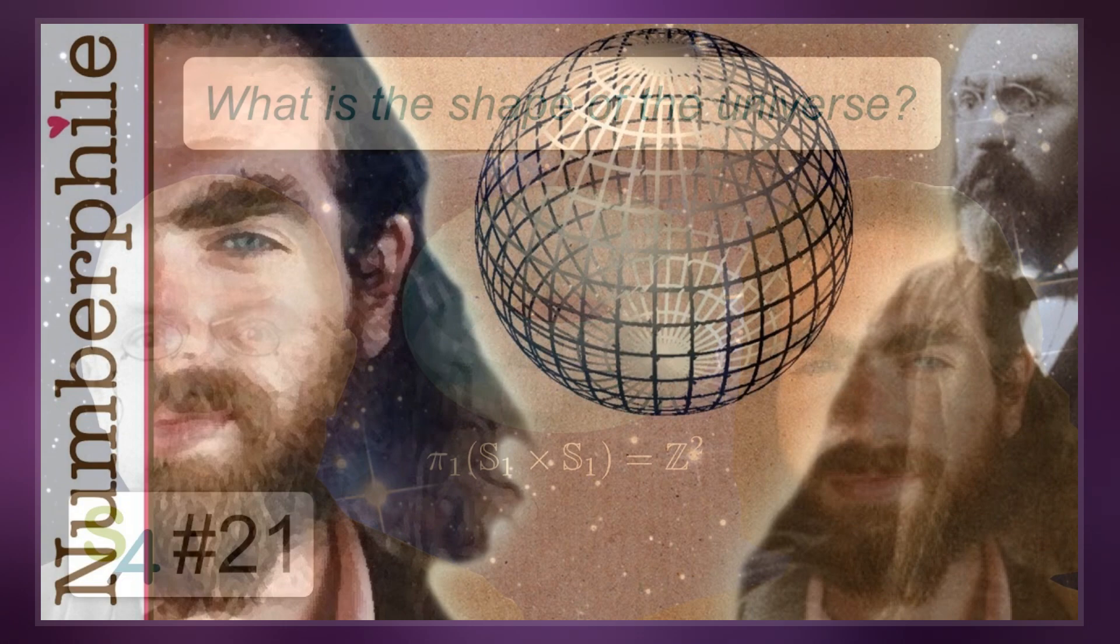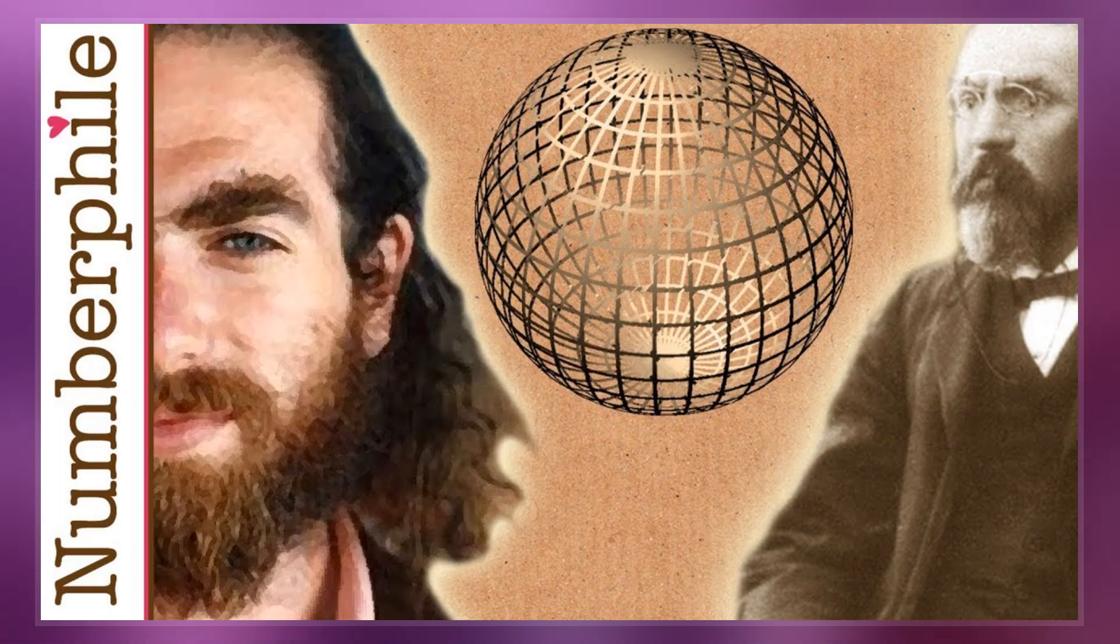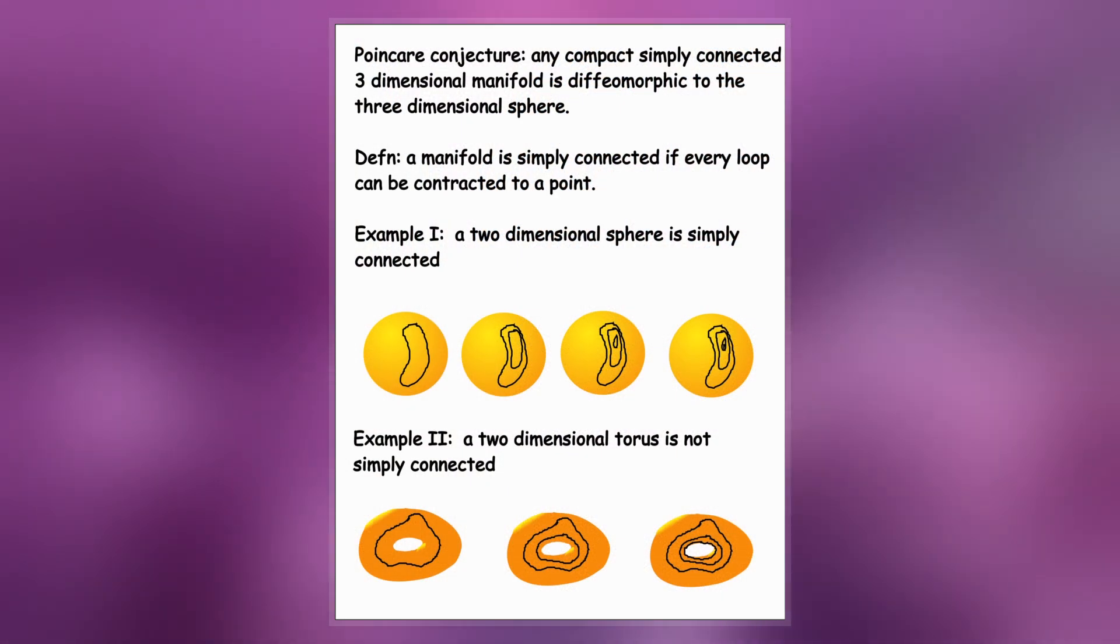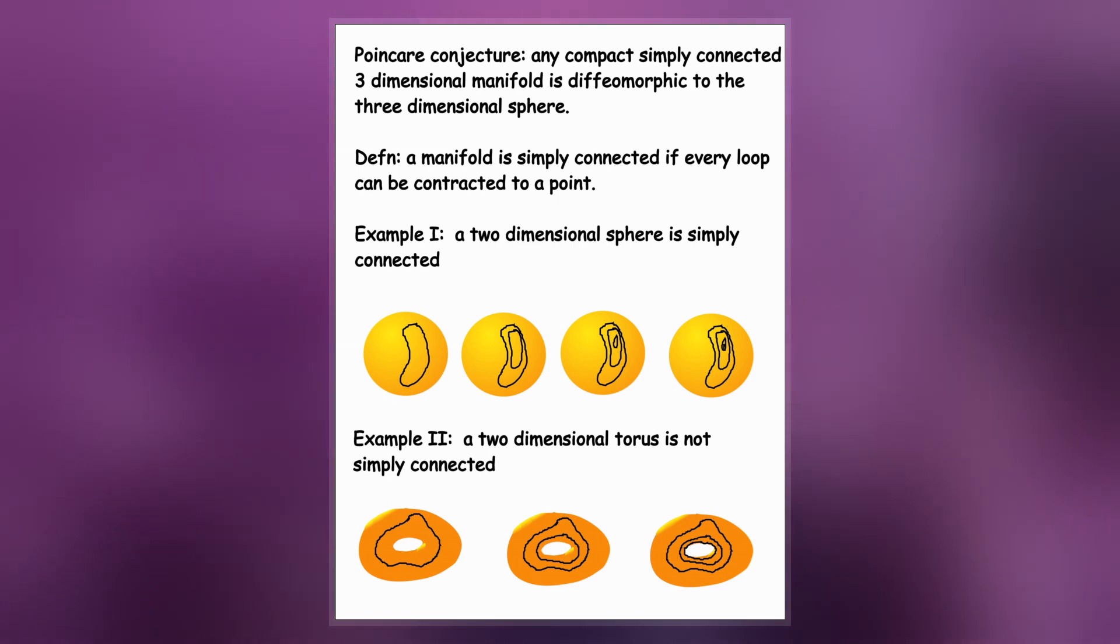An equivalent form of the conjecture involves a coarser form of equivalence than homeomorphism called homotopy equivalence. If a three-manifold is homotopy equivalent to the three-sphere, then it is necessarily homeomorphic to it.